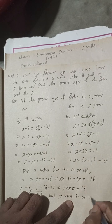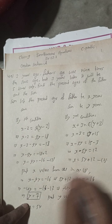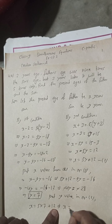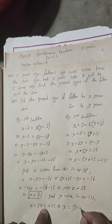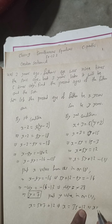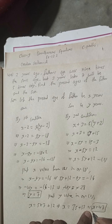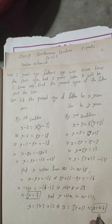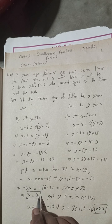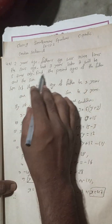Now substitute the y value into equation two: x equals five times 7 plus 12, which gives x equals 35 plus 12, so x equals 47. The answer in the book is 47 years for the father and 7 years for the son — this matches our answer.